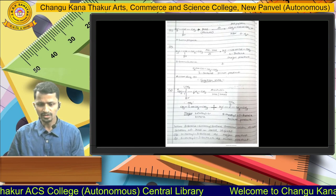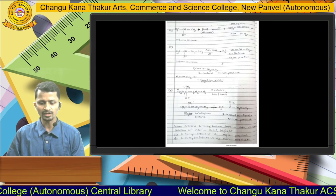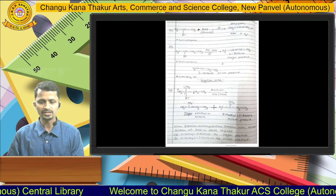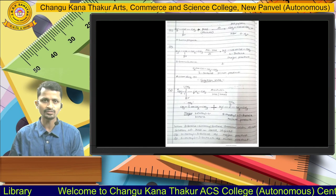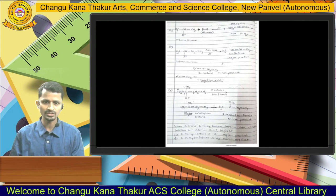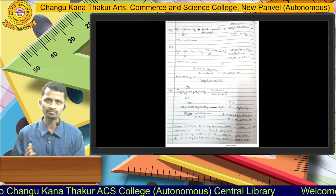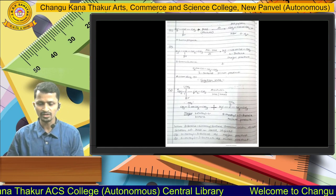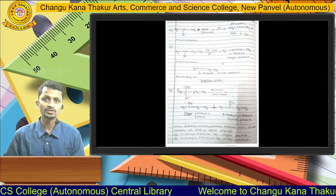For example, 2-bromopropane treated with an alcoholic solution of KOH gives propene as the product. Here again dehydrohalogenation takes place: hydrogen is lost from the beta carbon atom and halogen is lost from the alpha carbon atom, giving propene (propylene) as the product.